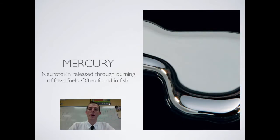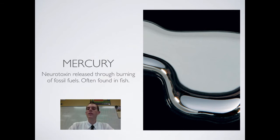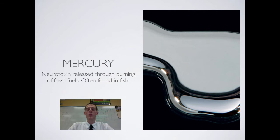Next up is mercury. Mercury in its inorganic form, just naturally occurring in the environment, is actually not harmful. But once it's in the environment, bacteria convert it into a form called methylmercury. Methylmercury is a very strong, very dangerous neurotoxin. Most of the mercury found in the environment that is harmful to us is released through the burning of fossil fuels, especially coal. When coal is burned, it releases a ton of mercury.